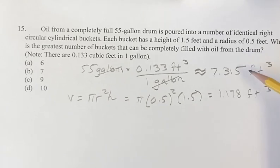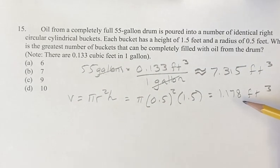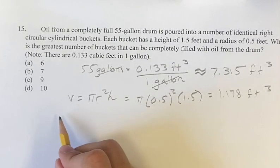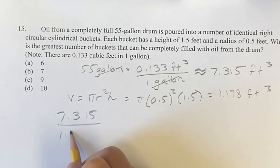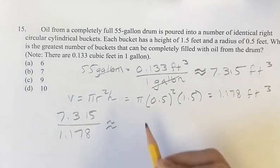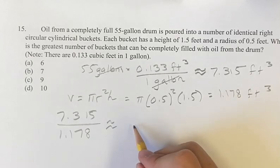Think of this: if it was 8 feet cubed and each bucket was 2, you could fill 4 two-cubic-feet buckets to get 8 cubic feet. In this situation, you have 7.315 divided by 1.178, which is roughly 6.21.